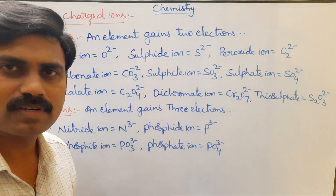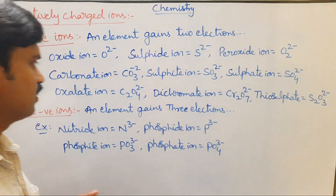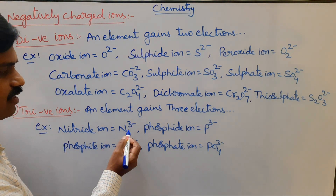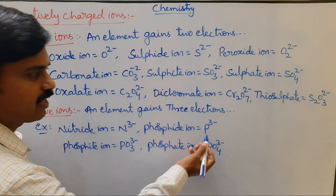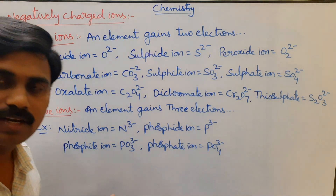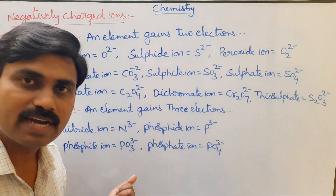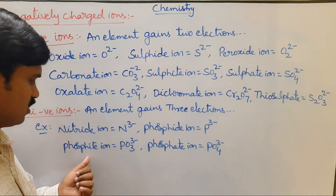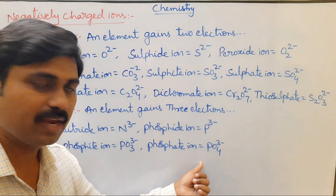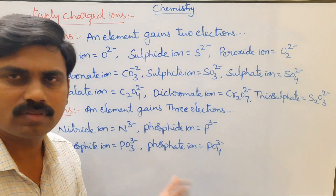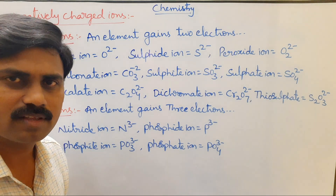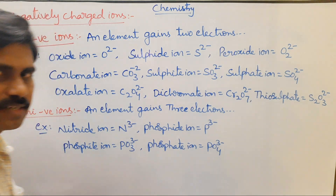Tri-negatively charged ions: nitride ion N³⁻, phosphide ion P³⁻. Tri-negatively charged radical ions: phosphonate ion PO₃³⁻ and phosphate ion PO₄³⁻, along with many other examples.